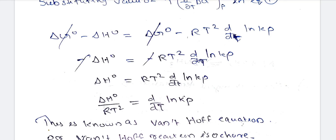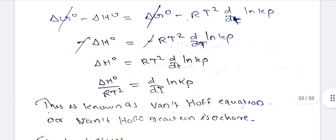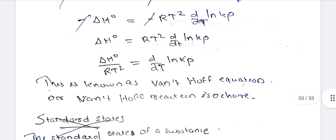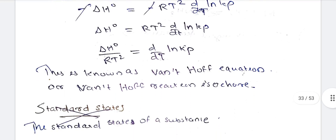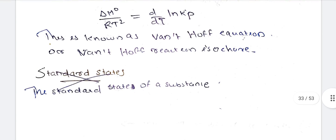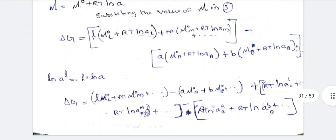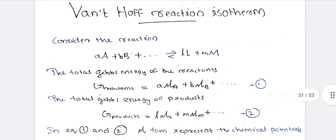This result is known as the Van't Hoff reaction isochore. Note the distinction: 'isotherm' means temperature is constant, while 'isochore' refers to constant volume. When pressure is constant, we have the corresponding form.